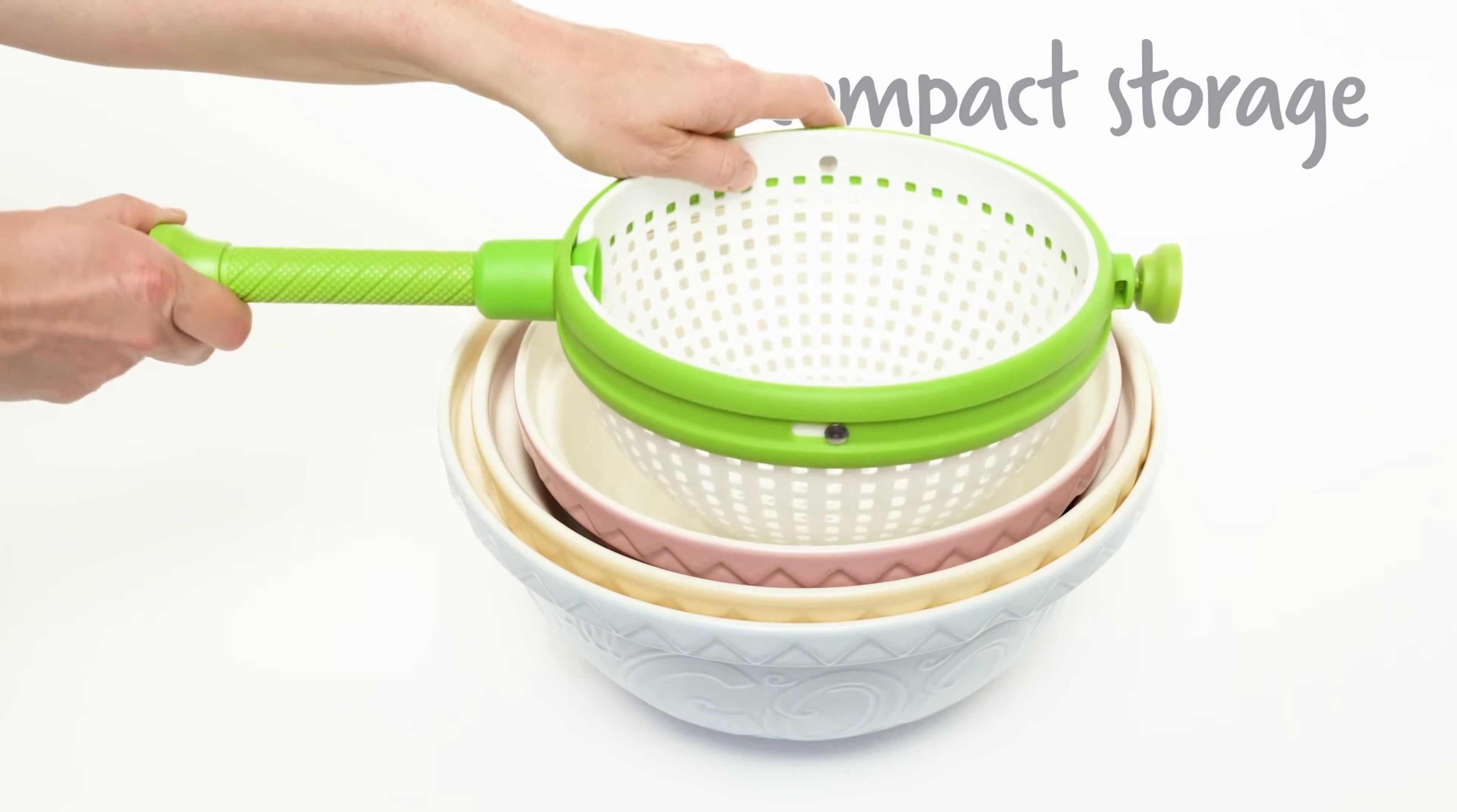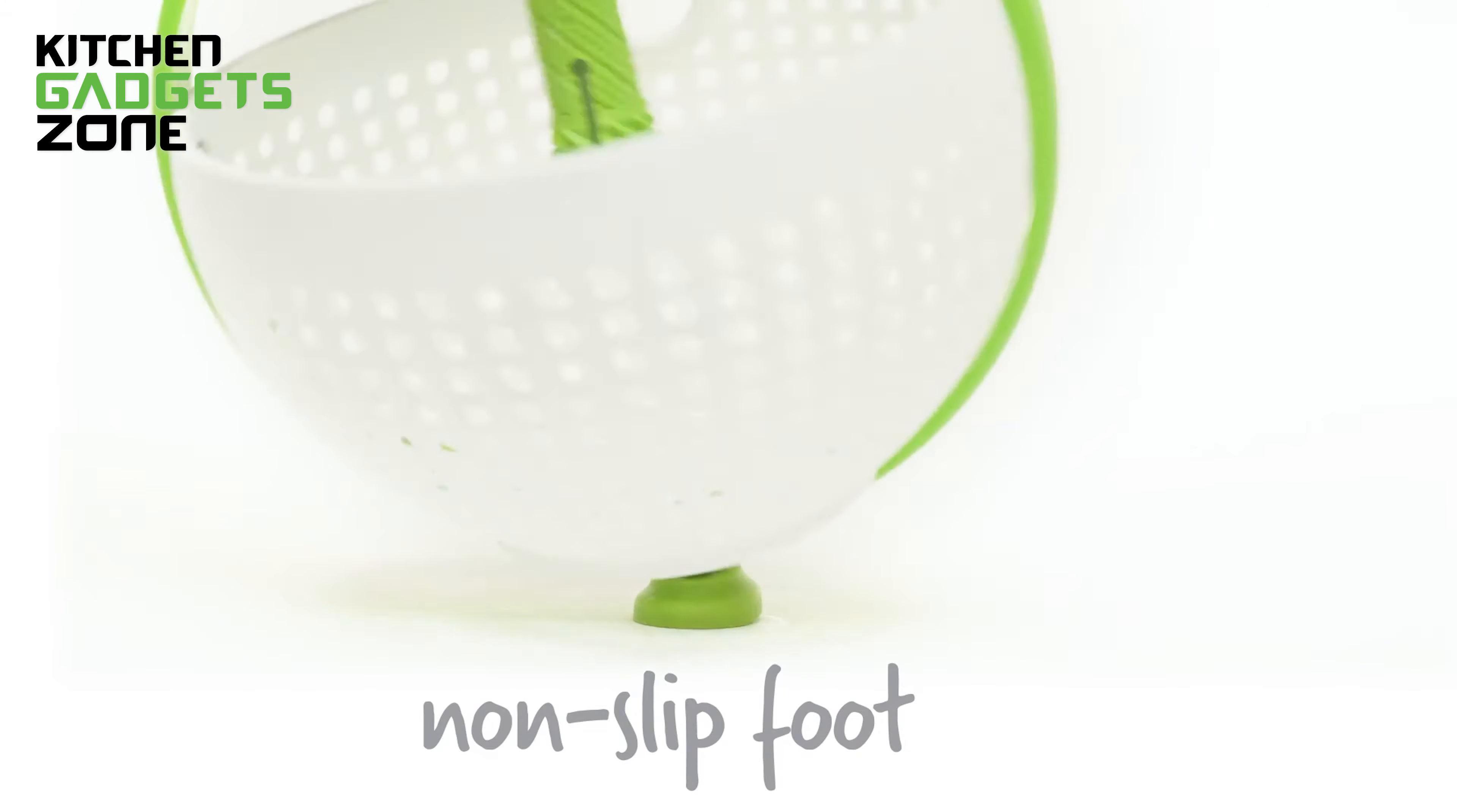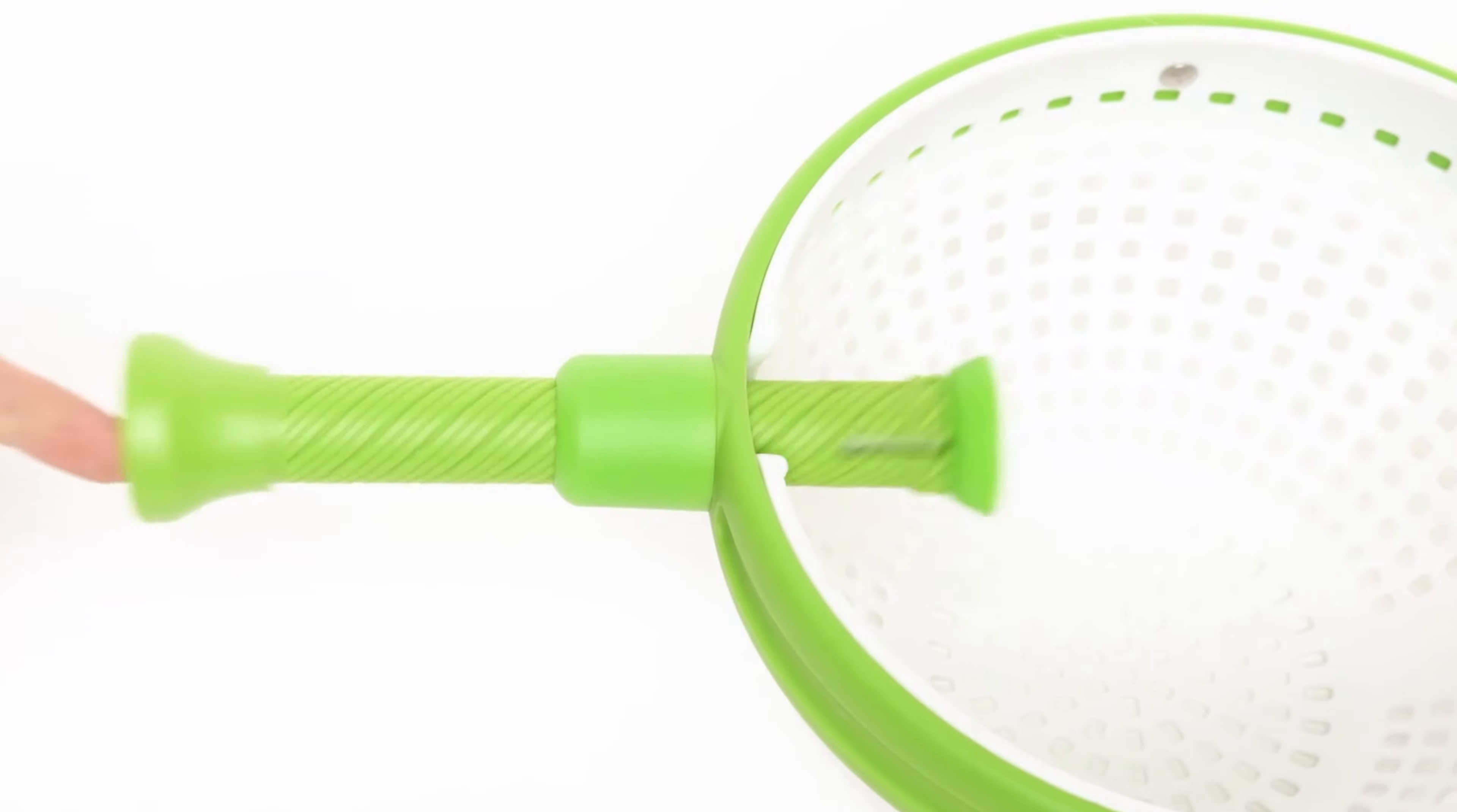The handy handle can be pushed inside the colander for space-saving storage, and the non-slip silicone foot keeps Spina stable even at high RPMs. It's also dishwasher-safe for easy cleaning. From colander to spinner and back again, the Spina is a true kitchen multi-tasker.